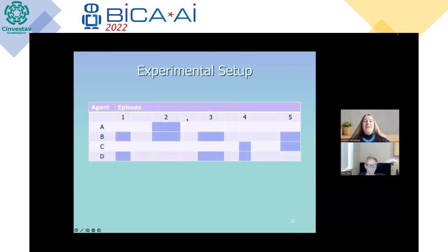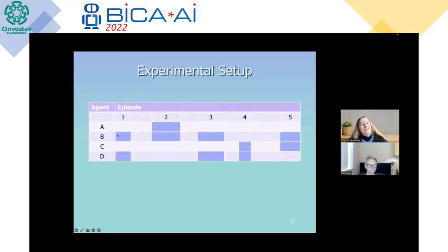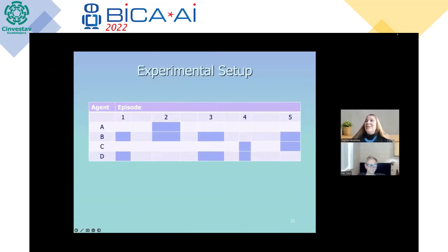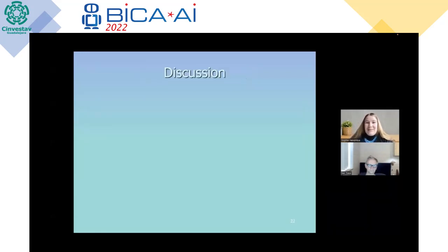Here you can see an overview of an example experimental setup with our four agents A, B, C, D across five or more episodes in which they can interact with each other. The episodes of interaction differ in their time lengths, and the breaks between them also differ in their length. The experiments are still being conducted at the moment — that is work in progress you will read about in our paper after this conference. I hope I've given you a nice overview of our agent models.